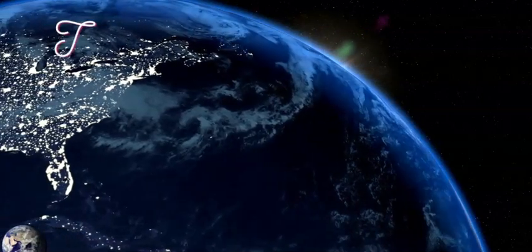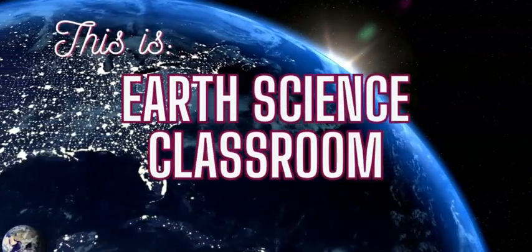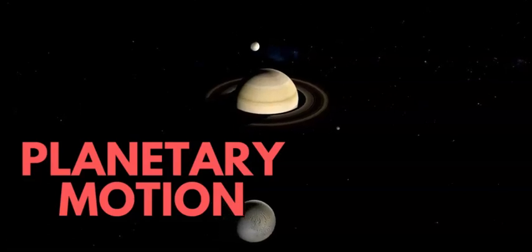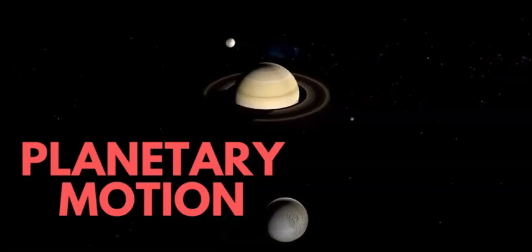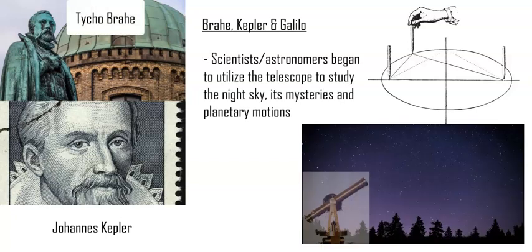This is the Earth Science Classroom. Once the Sun was put into the center by Copernicus in a heliocentric model, other scientists moving forward could work with this and do much better experiments and understanding, and put math into the motion of planets around the Sun and how they orbit and revolve.